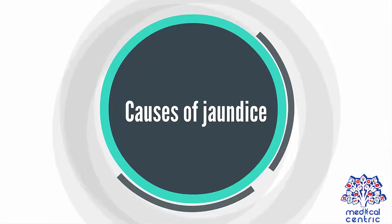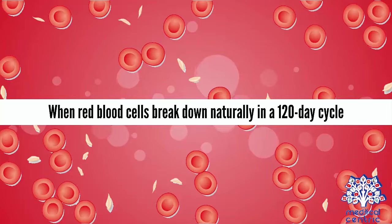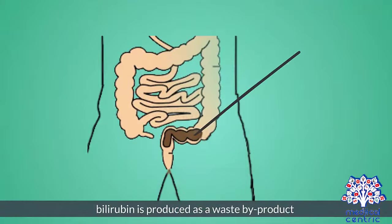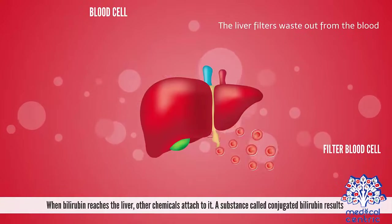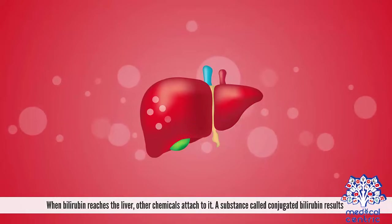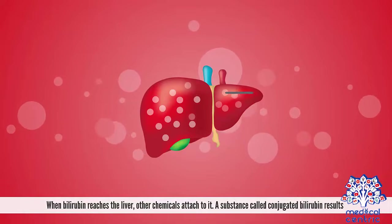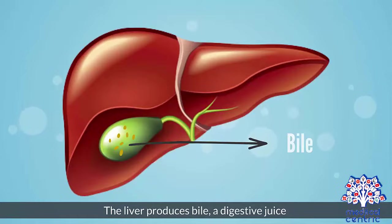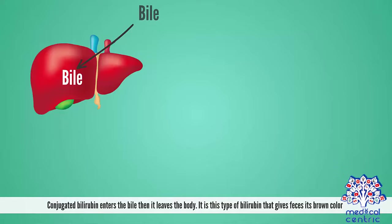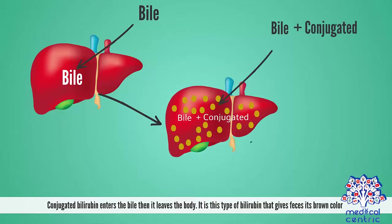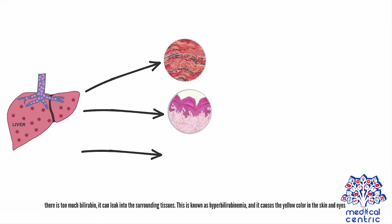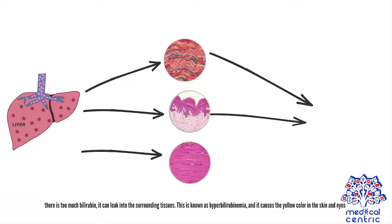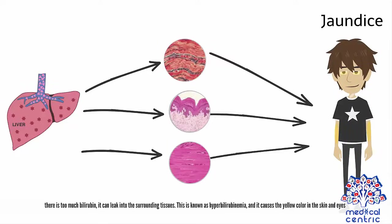When red blood cells break down naturally in a 120-day cycle, bilirubin is produced as a waste by-product. The liver filters waste out from the blood. When bilirubin reaches the liver, other chemicals attach to it, and a substance called conjugated bilirubin results. The liver produces bile, a digestive juice. Conjugated bilirubin enters the bile, then leaves the body — it is this type of bilirubin that gives feces its brown color. If there is too much bilirubin, it can leak into the surrounding tissues. This is known as hyperbilirubinemia, and it causes the yellow color in the skin and eyes.